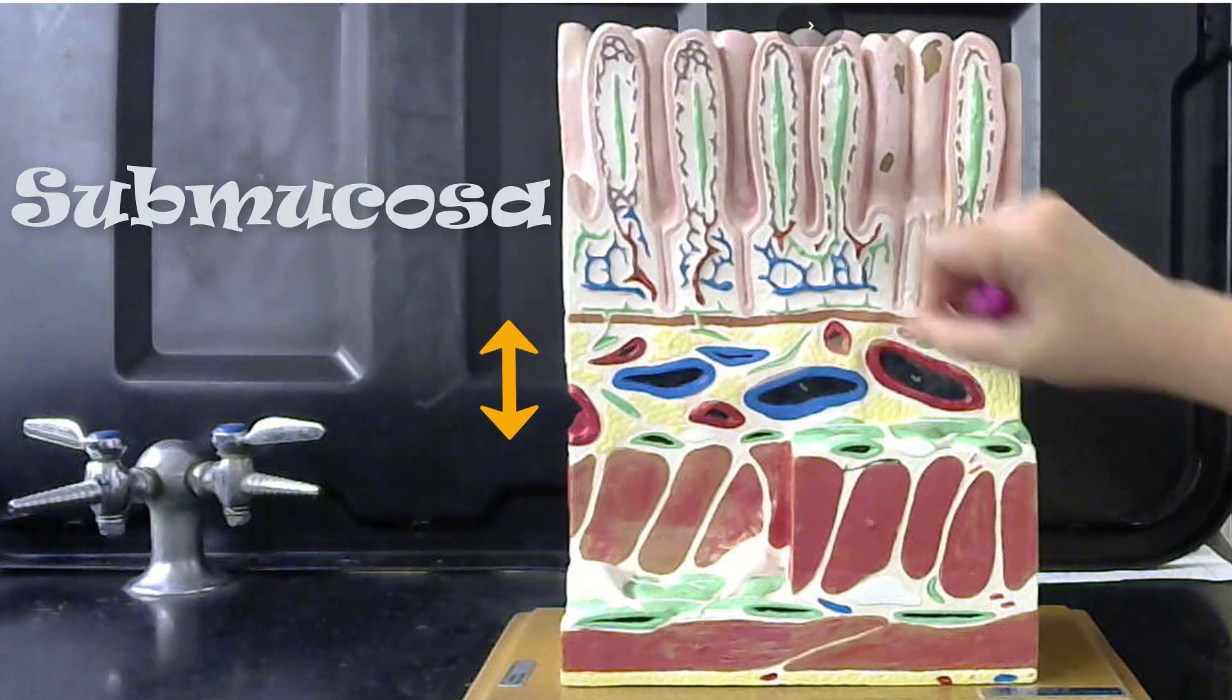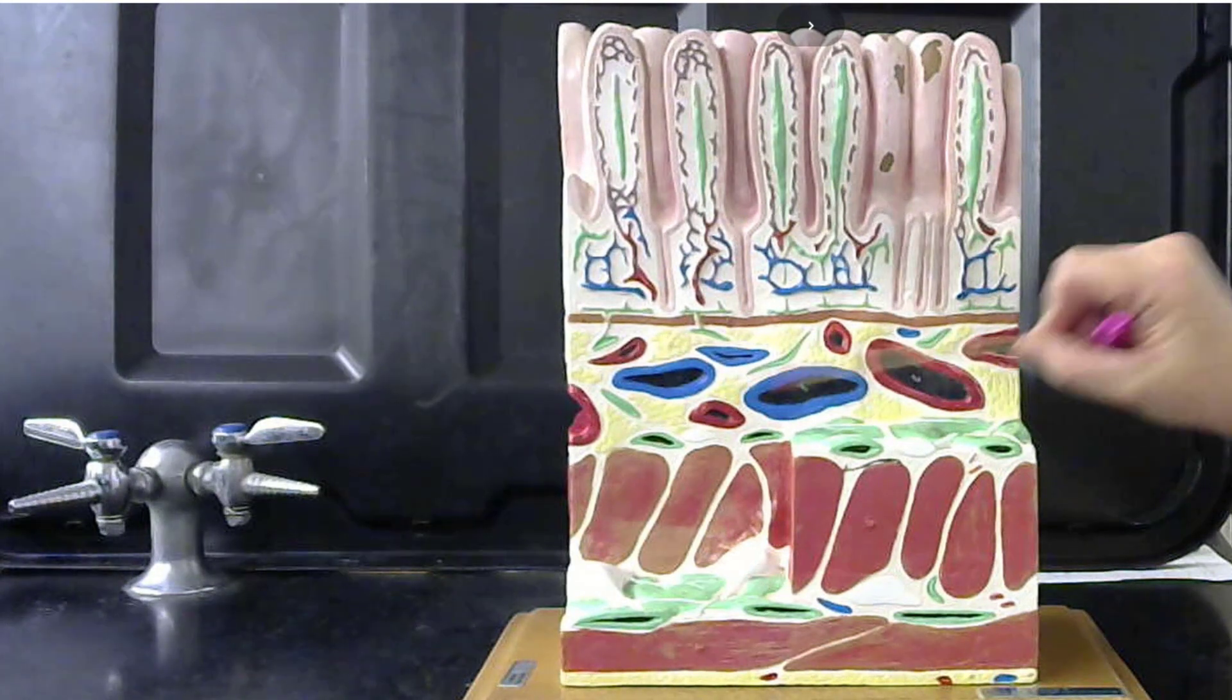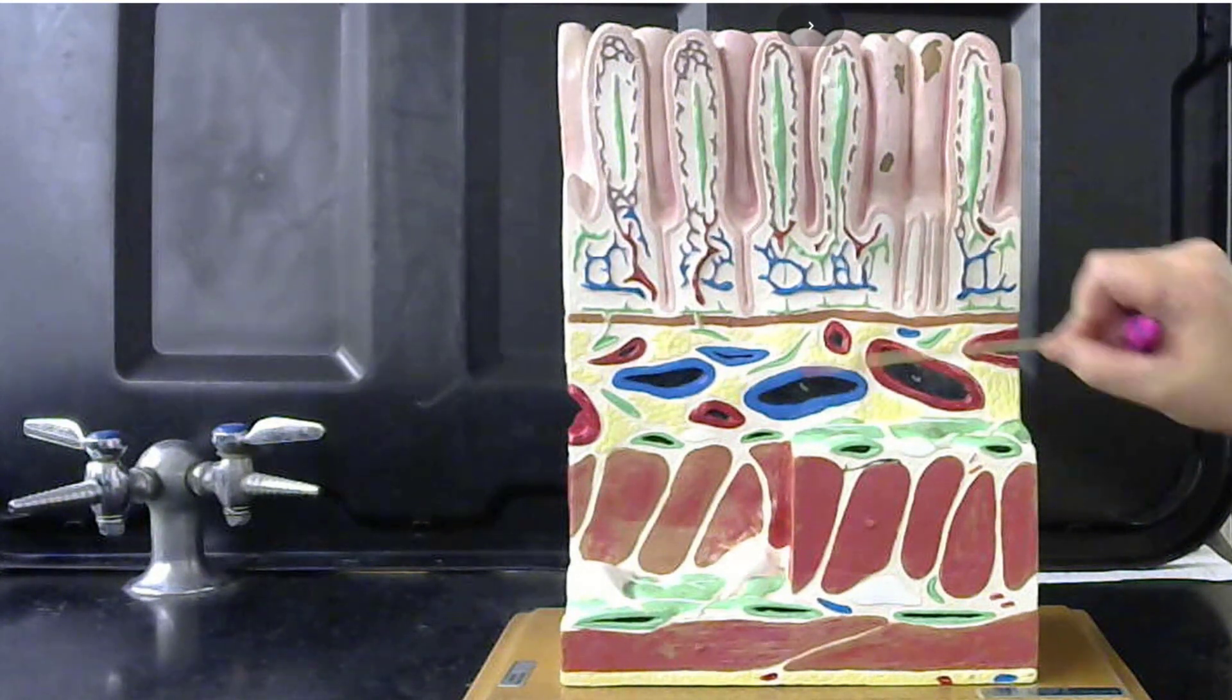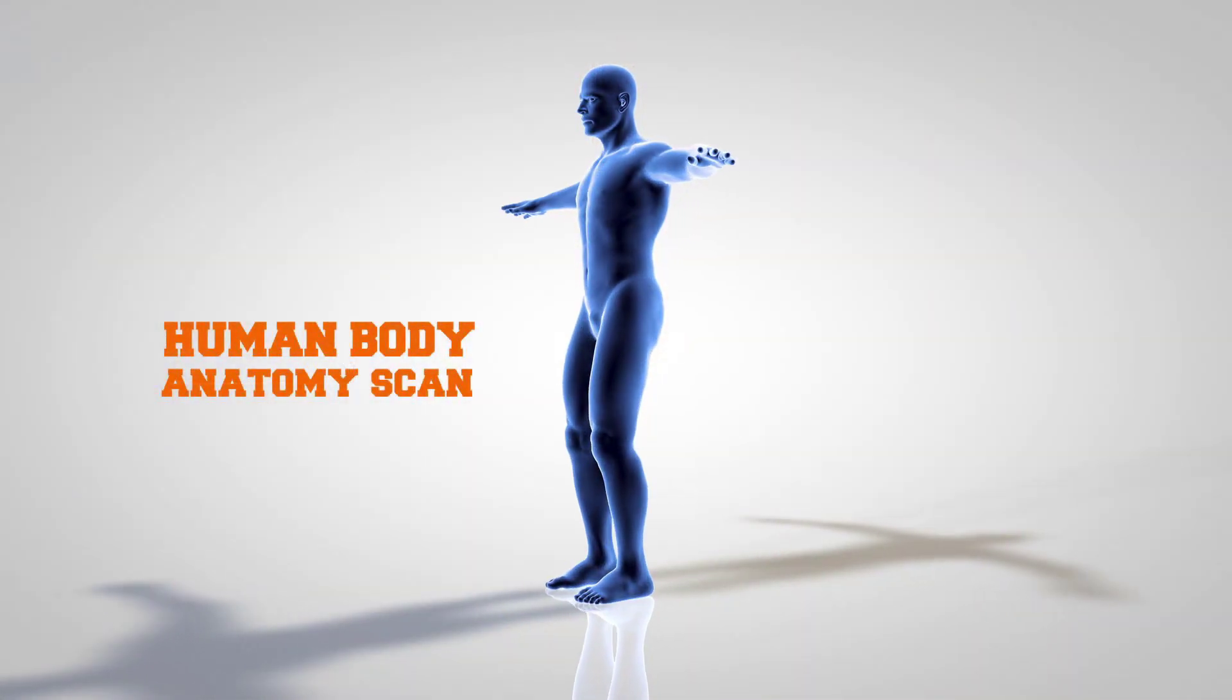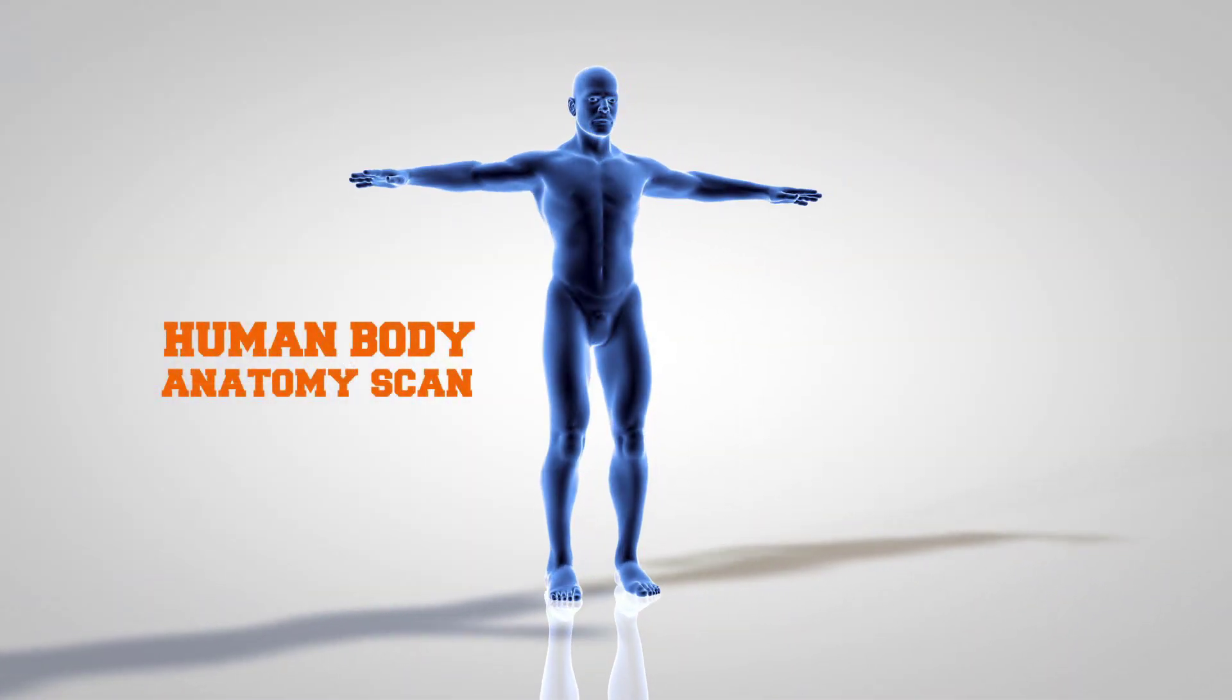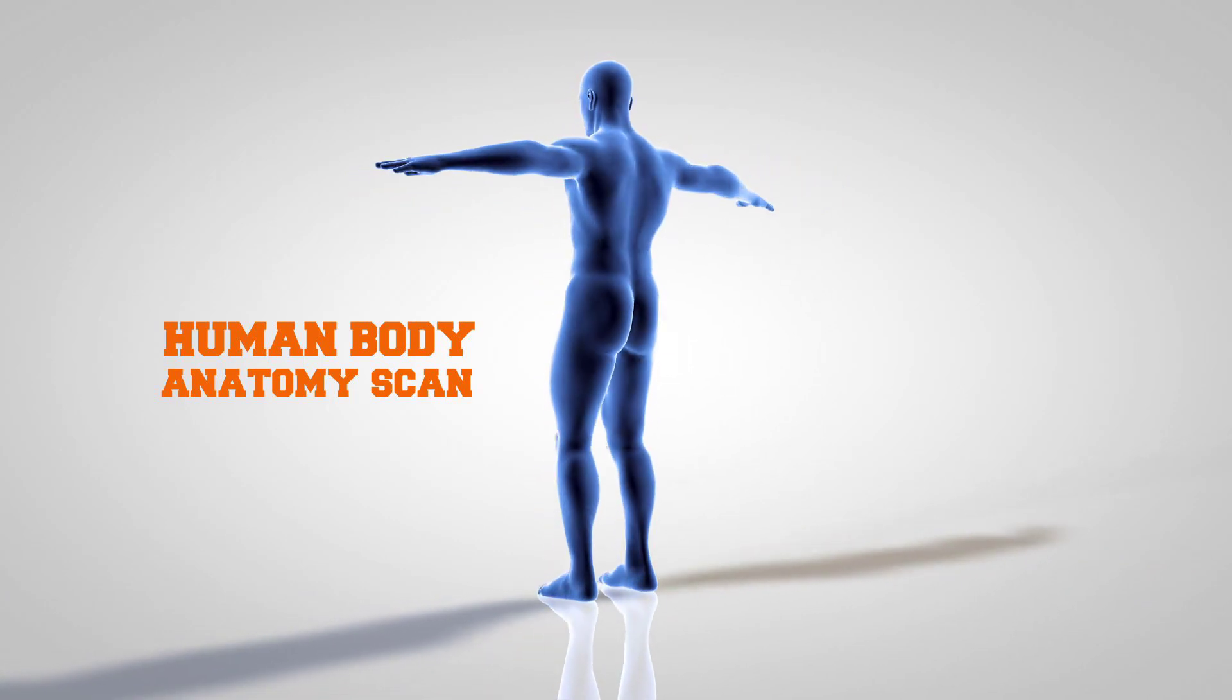Underneath the mucosa we see large blood vessels and glands, and this layer is the submucosa. Under the submucosa layer we have the muscularis layer. This is where we have the smooth muscle that is going to help move the chyme along the small intestines.